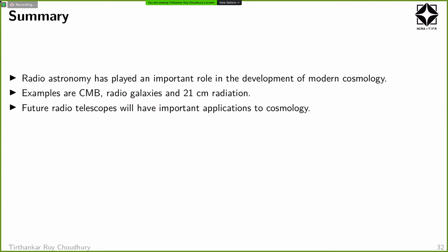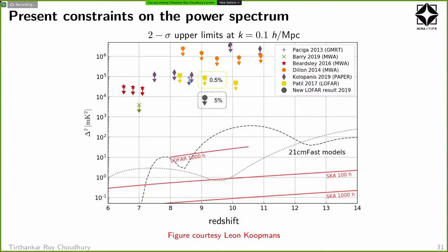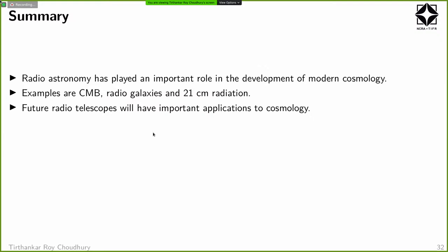In summary, three main take-home points: radio astronomy has played a very important role in the development of modern cosmology, with three main examples — CMB, radio galaxies, and 21-cm radiation. Future radio telescopes are going to have very important applications to cosmology. The noise level for the upcoming Square Kilometre Array is much lower than where current experiments are, so once SKA comes online and data analysis and systematics are under control, the first-star signal will be extremely detectable.